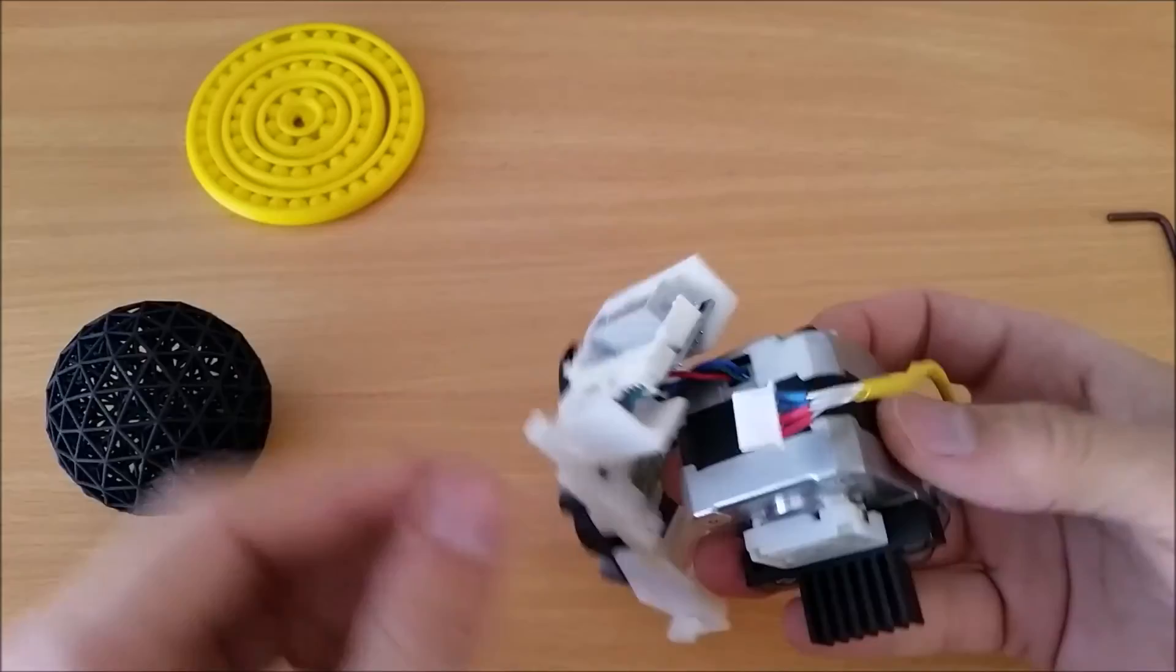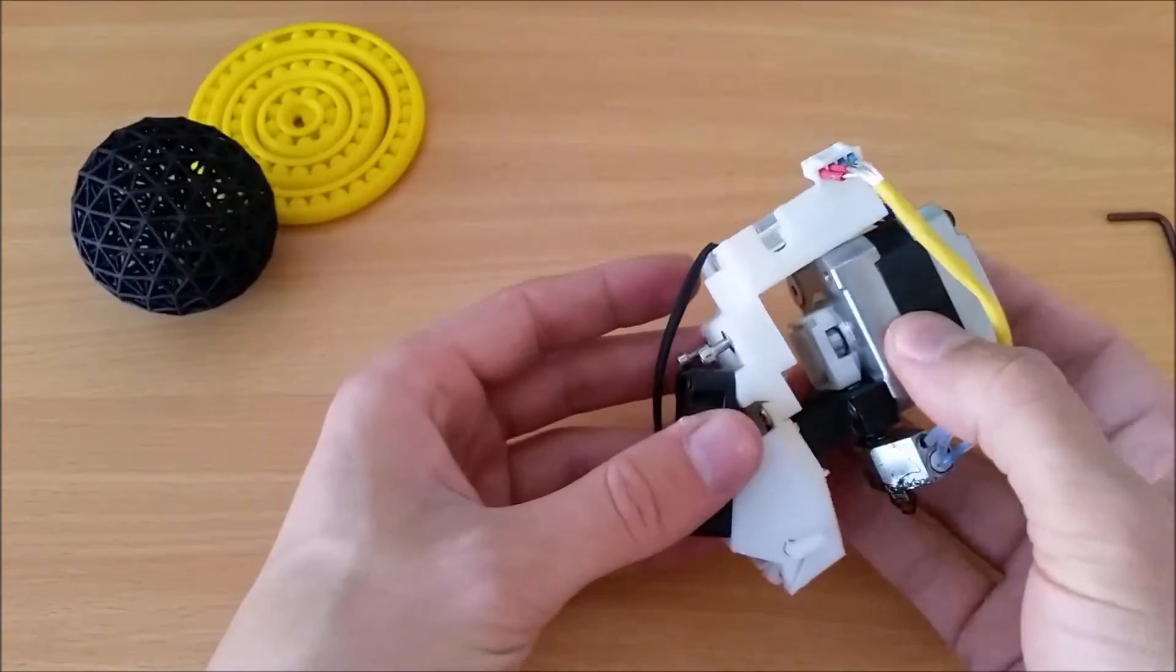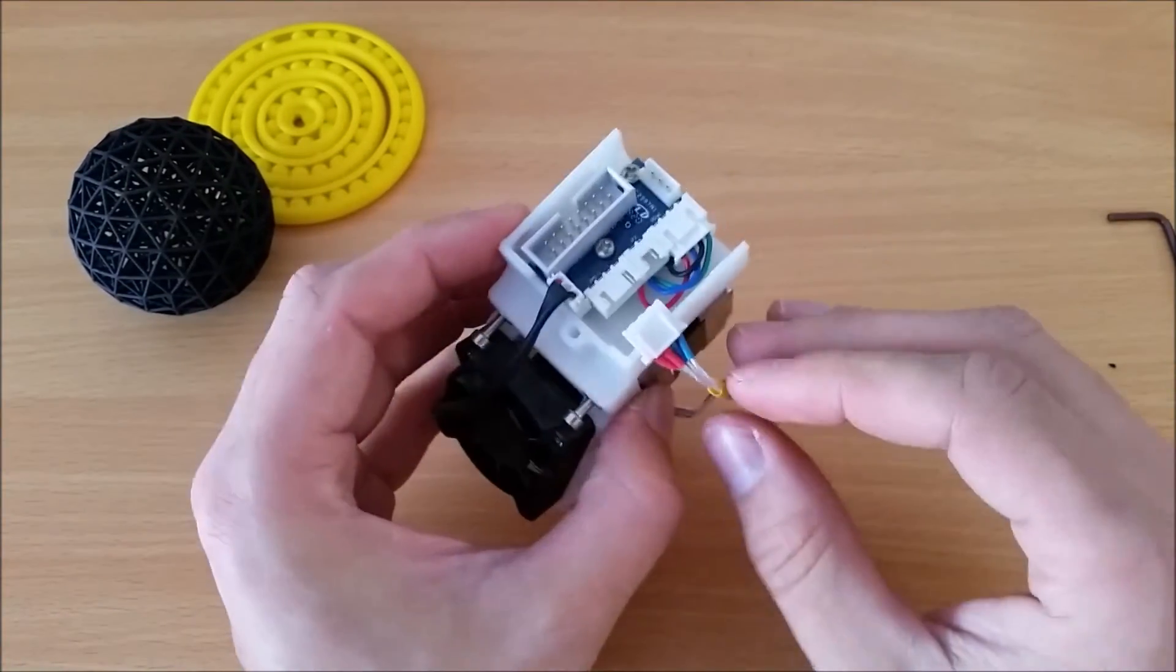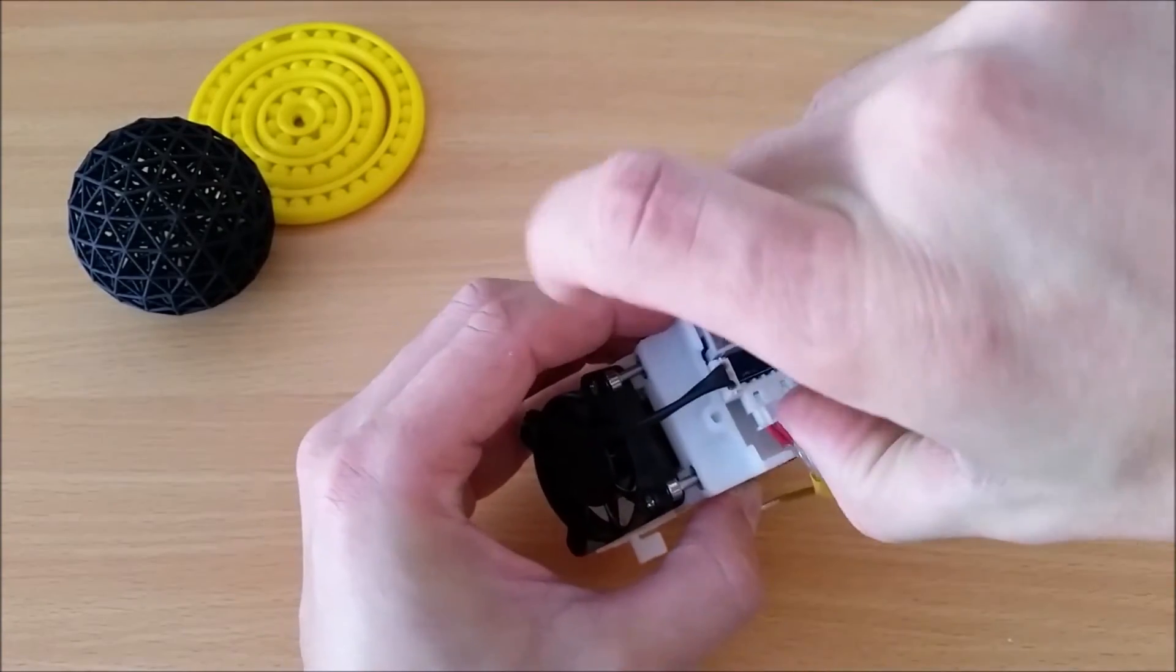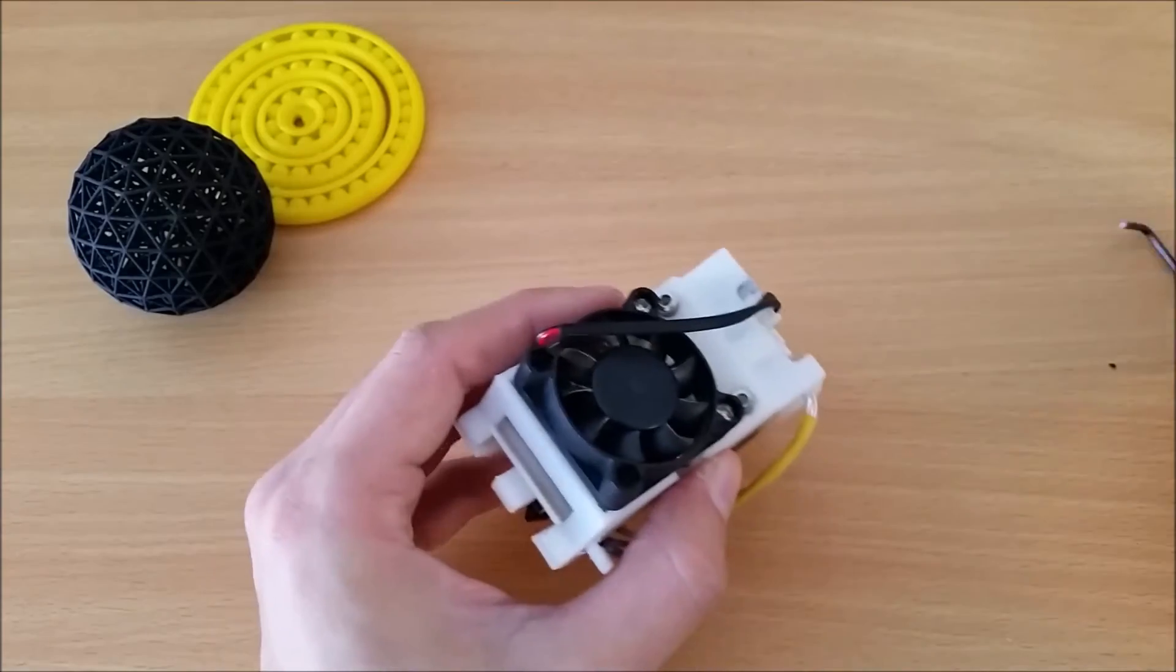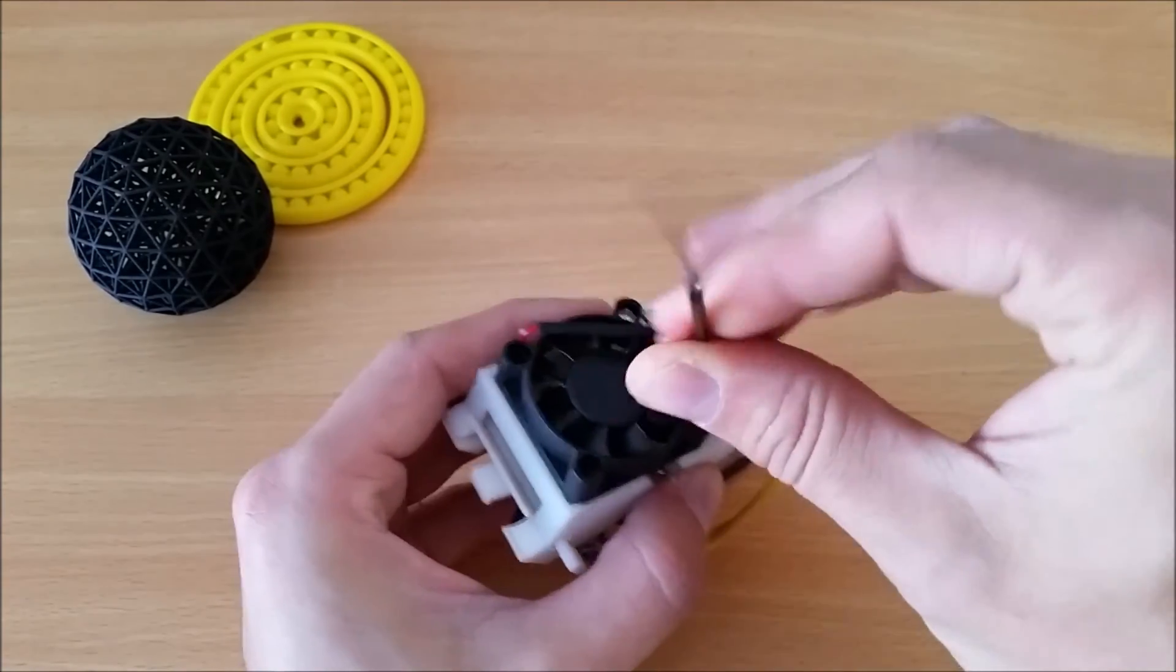Once that's done, take the white housing, slide it back over the heatsink, push it into place, connect up the extruder assembly like so, and tighten up the two screws which we took off in the first place.